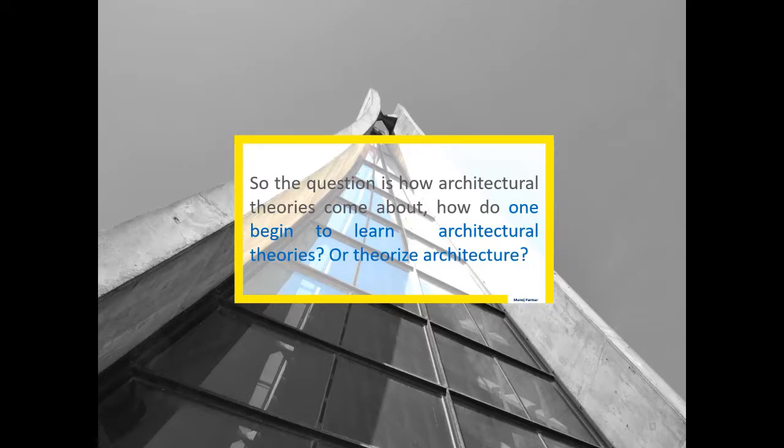Architectural theory investigates the method of critical, interdisciplinary and outward facing research. Architectural theory speculates on past and present simultaneously and influences the process of making of architectural practice and pedagogy.